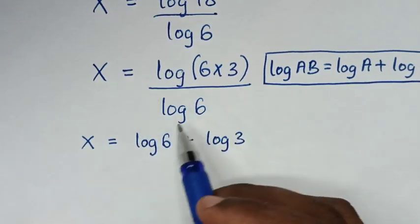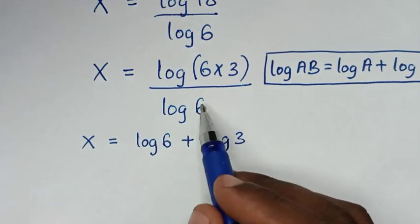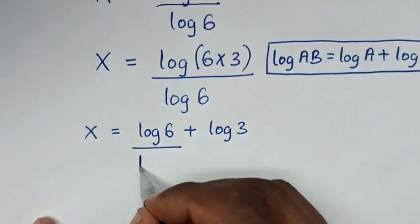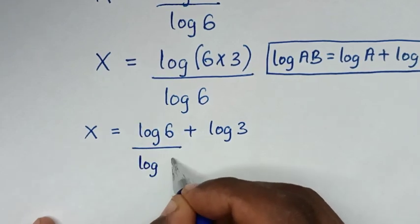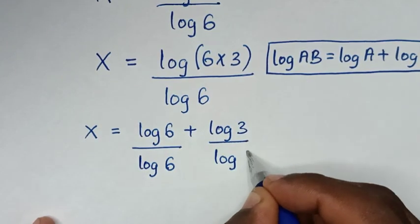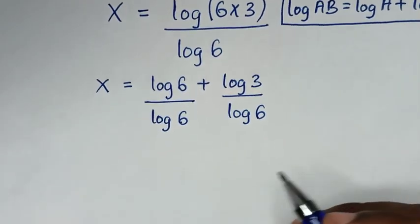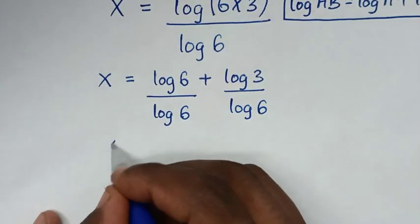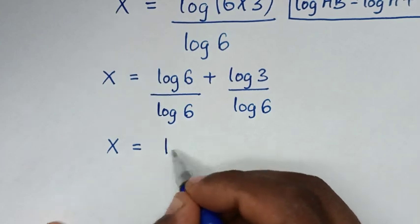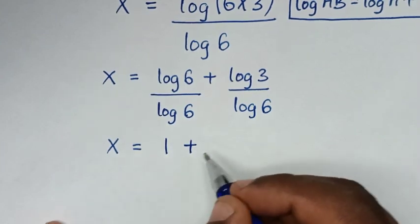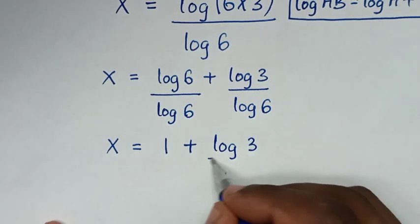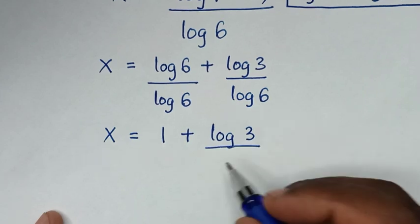Then, over this log of 6, it can be divided into each part. So it will be log of 6 over log of 6, plus log of 3 over log of 6. Then, log of 6 divided by log of 6 is 1, so x is equal to 1 plus log of 3 over log of 6.